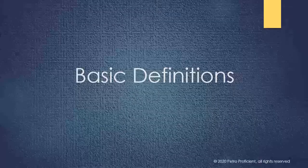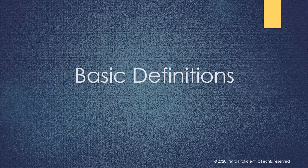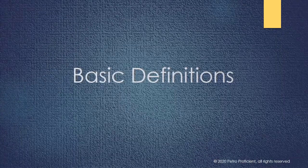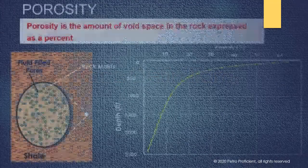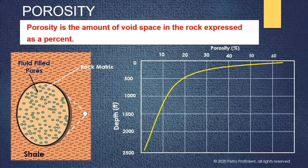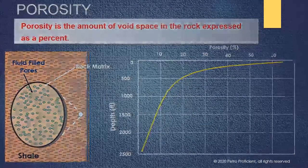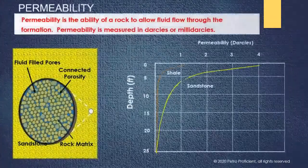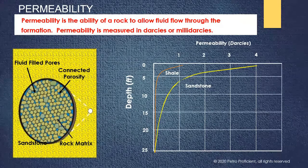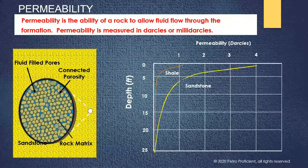Let us review some of the basic definitions and concepts associated with subsurface formations. Porosity is defined as the amount of void space in the rock expressed as a percent. Permeability is the ability of a rock to allow fluid flow through the formation, and is measured in Darcys or Millidarcys.